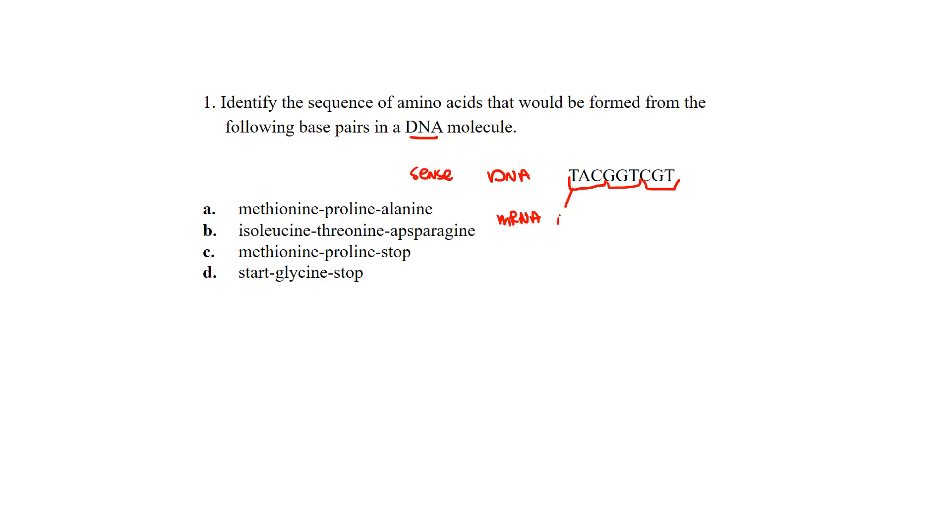So T always binds with A, and there is A. A always binds with T, but U takes its place. C always binds with G, and that, again, is also called a codon.